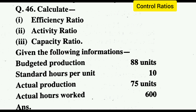Today in this video we will solve one question and learn how to calculate efficiency ratio, activity ratio, and capacity ratio. Given the following information: budgeted production 88 units, standard hours per unit 10, actual production 75 units, actual hours worked 600. So this is our question, let's get started.